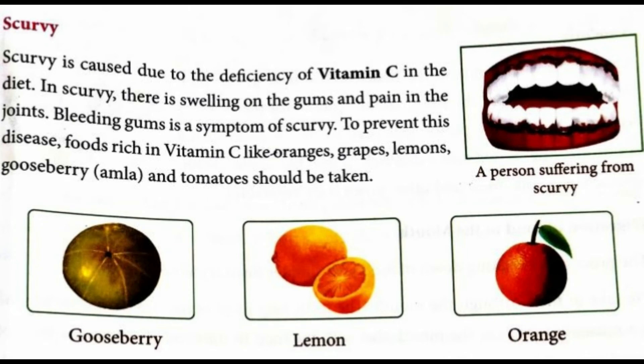Scurvy is caused due to the deficiency of vitamin C in the diet. In scurvy, there is swelling on the gums and pain in the joints. Bleeding gums is a symptom of scurvy. To prevent this disease, foods rich in vitamin C like oranges, grapes, lemon, amla and tomato should be taken.